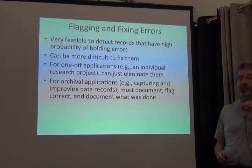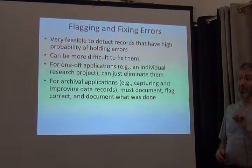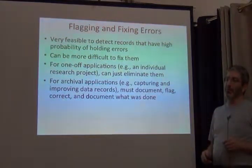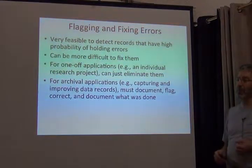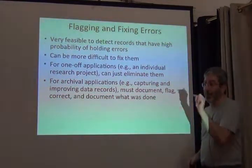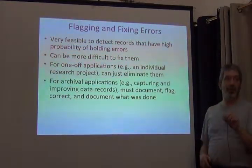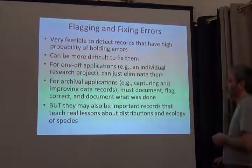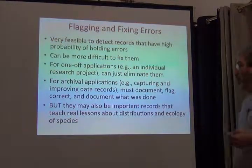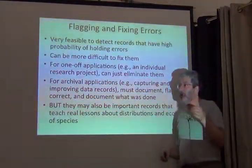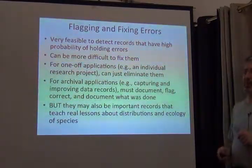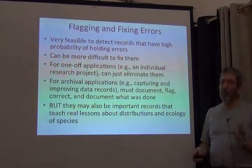Perhaps the most important thing is you have to document exactly what you did. You don't just go in and correct the latitude and longitude, because maybe your correction is a mistake — maybe the collector really was at that site. Somebody in the future may have better information than you did. So you have to document exactly what was done and preserve the original values. That's why Darwin Core has things like verbatim locality or verbatim date rather than interpreted values. And if we're in research mode and just throw away records, it may well be that those problematic records are important and really teach us something about the biology of the species.